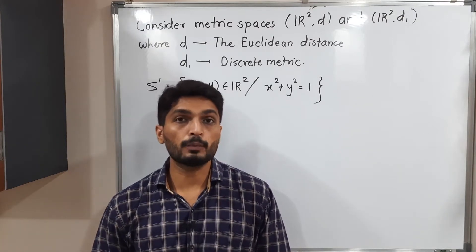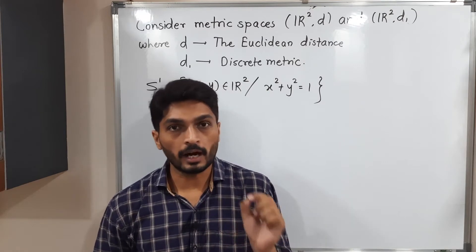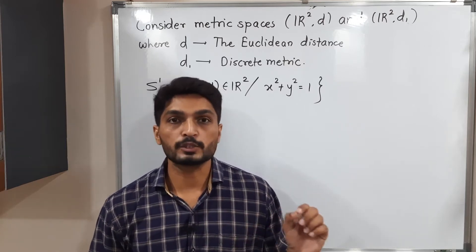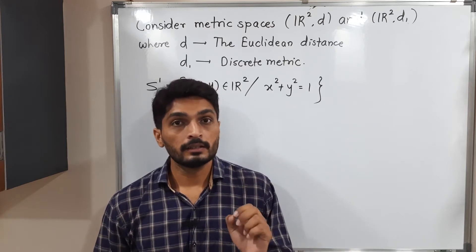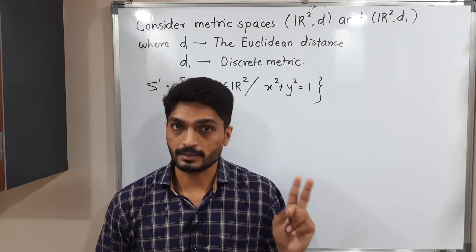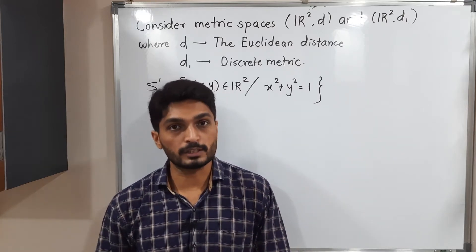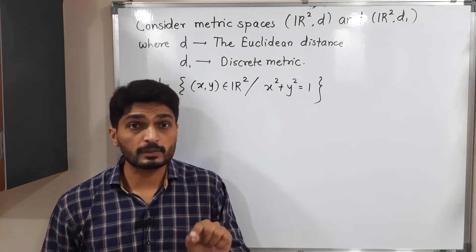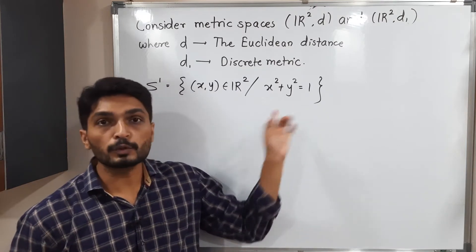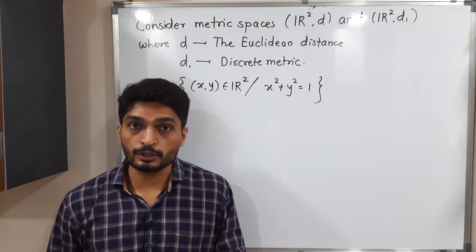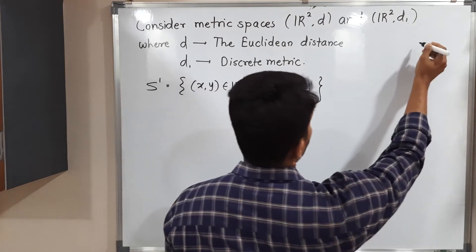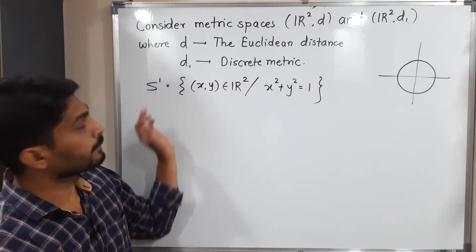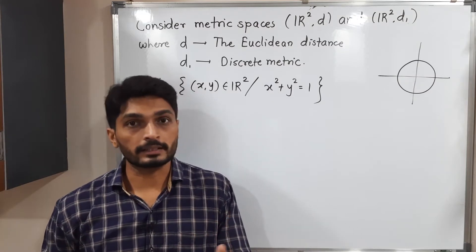Let us discuss this example. We have two metric spaces R²,D and R²,D₁. D is the Euclidean metric, where D(X,Y) equals the square root of (X₁−Y₁)² + (X₂−Y₂)². The second metric D₁ is the discrete metric, where D₁(X,Y) equals 0 if the points are the same, and 1 if the points are distinct. We are given the set S1 defined as {(X,Y) ∈ R² : X²+Y²=1}, which is the equation of a circle with center at the origin and radius 1. We need to check whether S1 is connected or disconnected in both metric spaces.